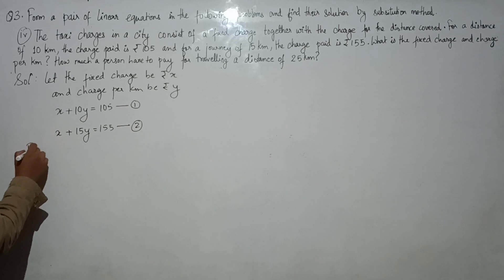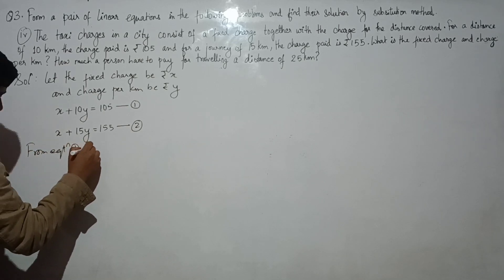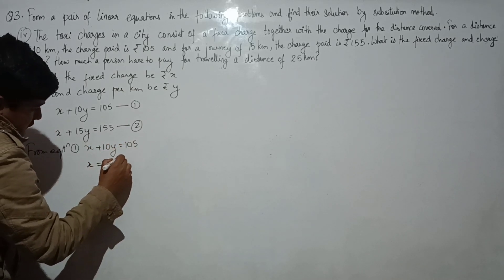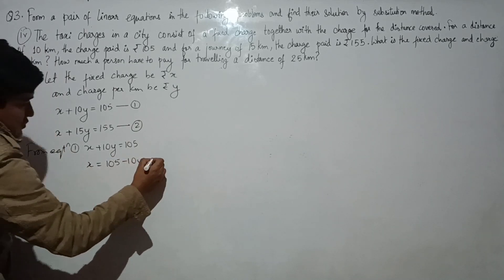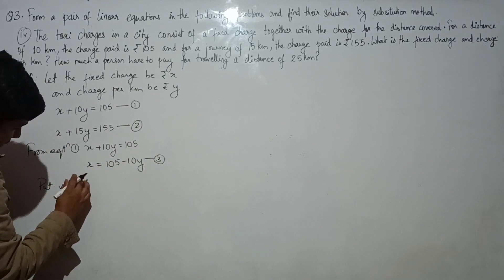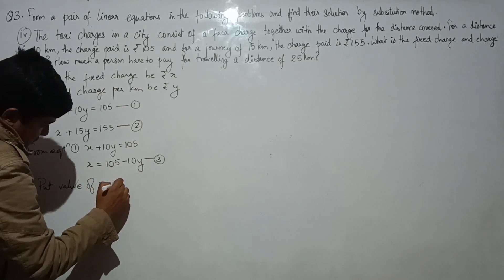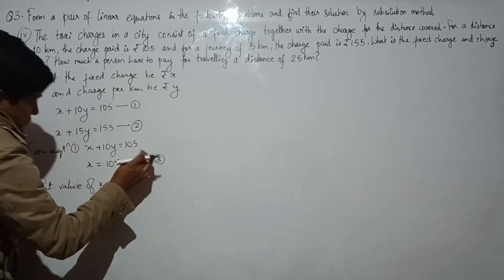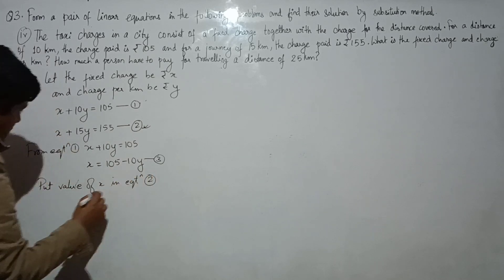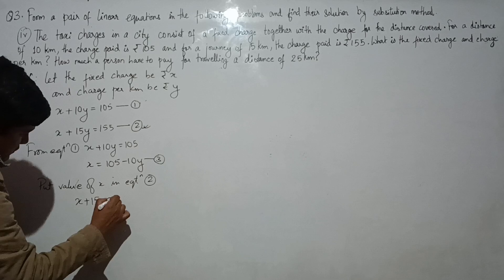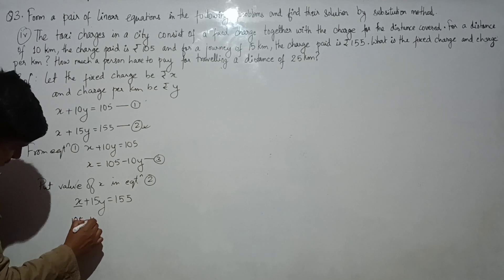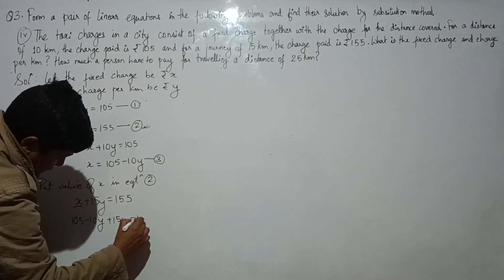From equation 1, x plus 10y equals to 105, or x equals to 105 minus 10y. Now substitute the value of x in equation 2. So x equals 105 minus 10y plus 15y equals to 155.